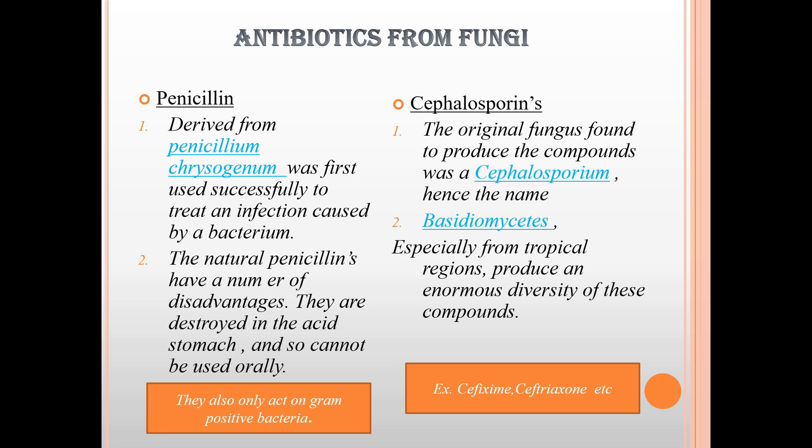Penicillin is derived from Penicillium chrysogenum and was first used successfully to treat an infection caused by bacteria. However, the natural penicillins have a number of disadvantages — they are destroyed by stomach acid.